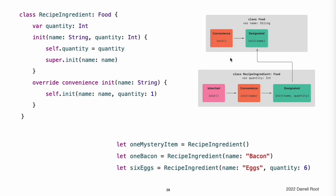The second class in the hierarchy is a subclass of Food called RecipeIngredient. The RecipeIngredient class models an ingredient in a cooking recipe. It introduces an Int property called quantity in addition to the name property it inherits from Food and defines two initializers for creating RecipeIngredient instances. The RecipeIngredient class has a single designated initializer, init(name:quantity:), which can be used to populate all of the properties of a new RecipeIngredient instance. This initializer starts by assigning the passed quantity argument to the quantity property, which is the only new property introduced by RecipeIngredient. After doing so, the initializer delegates up to the init(name:) initializer of the Food class, satisfying safety check one from two-phase initialization.